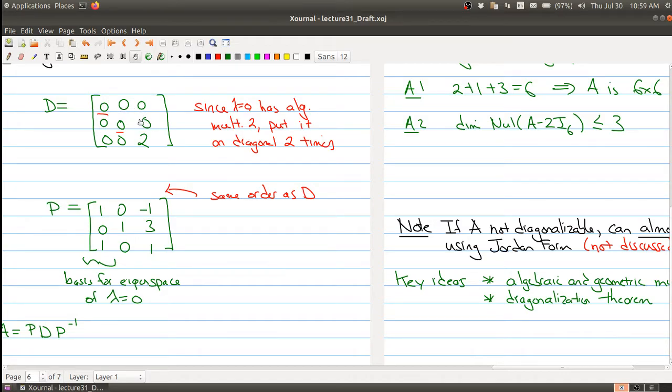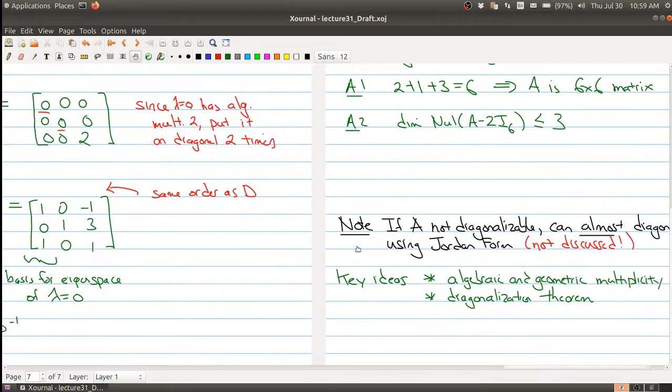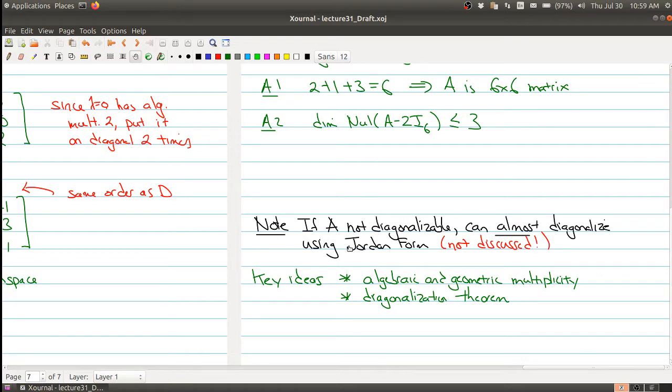And in the Jordan form, the middle matrix is not necessarily a diagonal matrix like here. You're also allowed a couple entries, other entries off the diagonal not to be zero. Although the middle matrix is still almost diagonal, that's called the Jordan form. But we're not going to discuss that in this class.